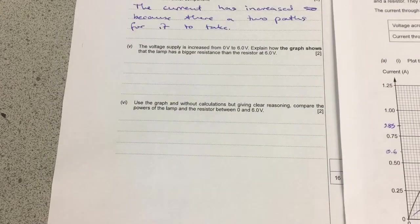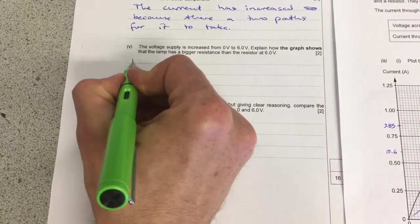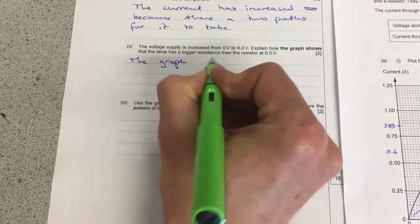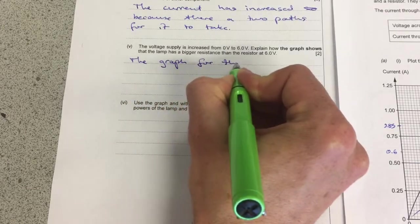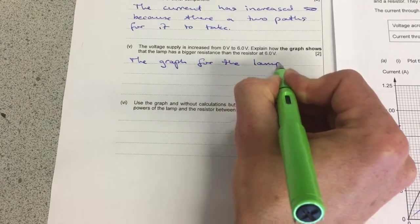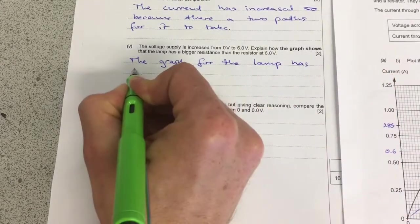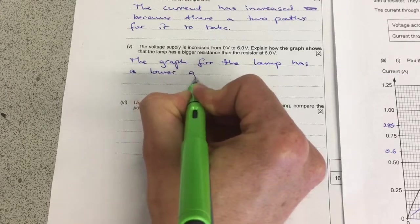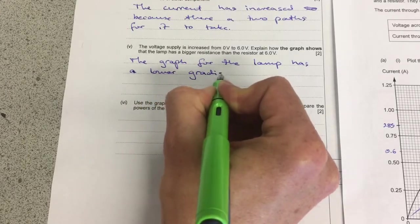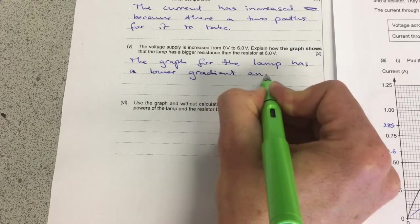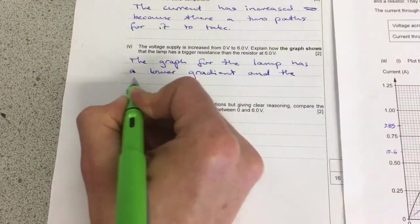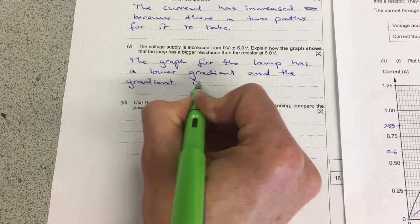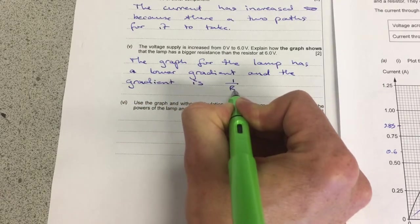So we can say here that the graph for the lamp has a lower gradient. And this is our second mark. The gradient is 1 over resistance.